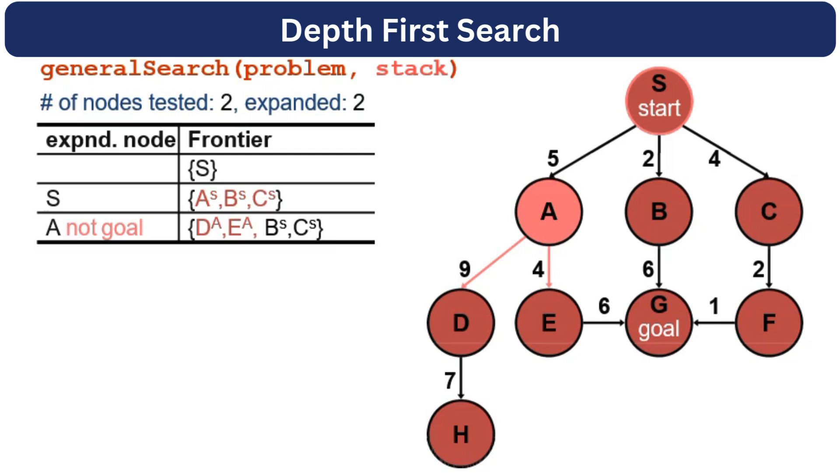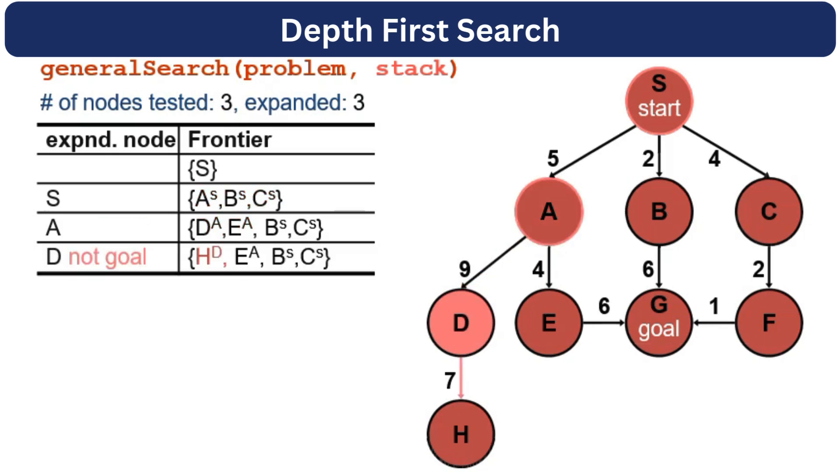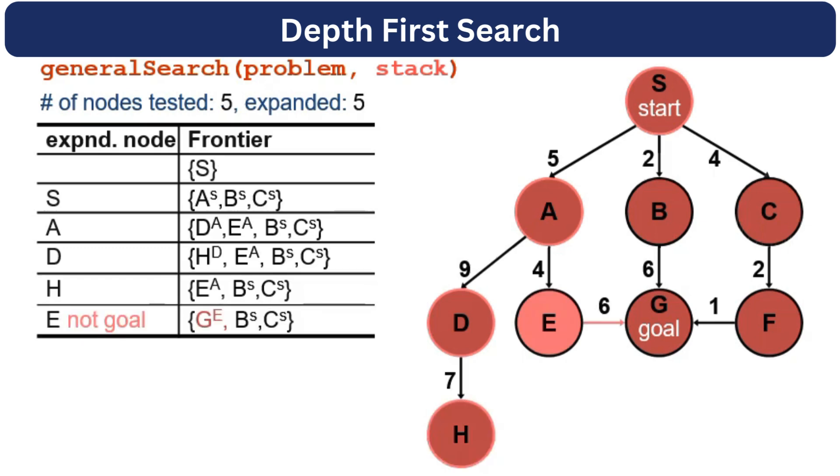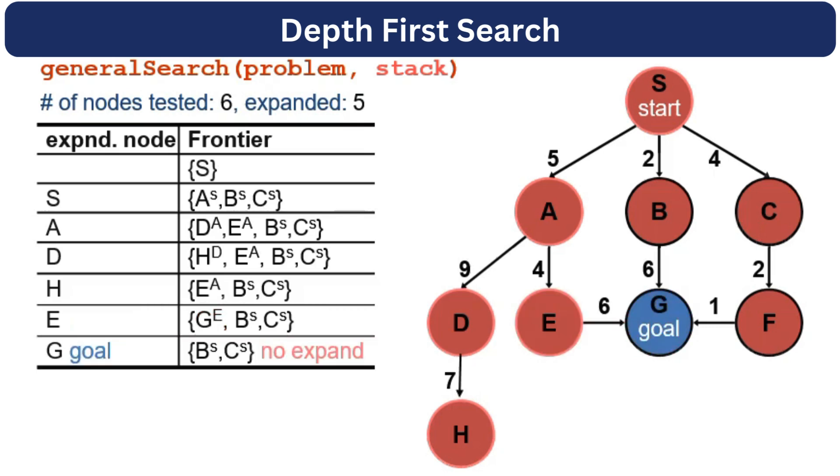A is not the goal, so we will expand the first element in the stack, which is D. Once we expand D, we will get a node H. We will expand H, and H is not a goal. There are no neighbors associated with H, so the next element in the stack will be popped out. Next element is E. We will explore E and go to its neighbor, which is G. We will push G at the top of the stack. Now we will pop the top element, which is G, and it's the goal. Now we will stop the algorithm and no further expansion will take place.